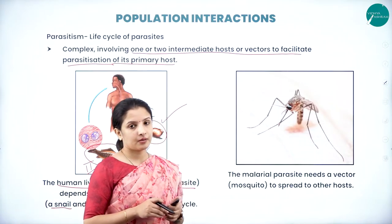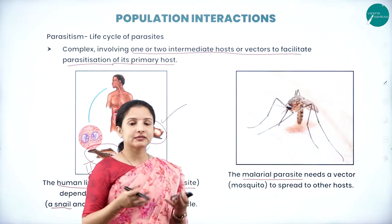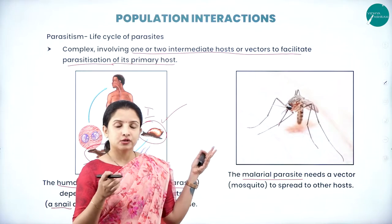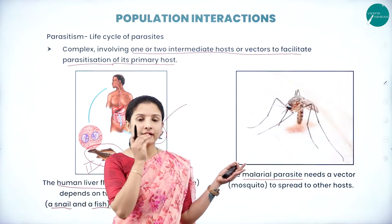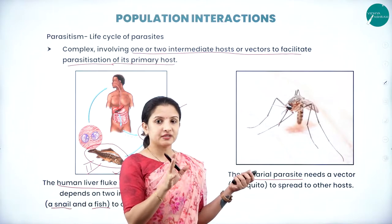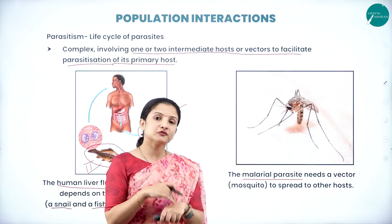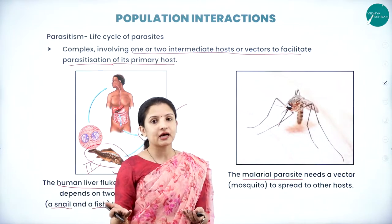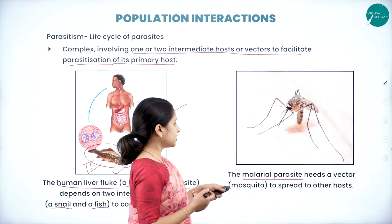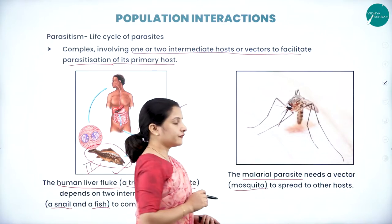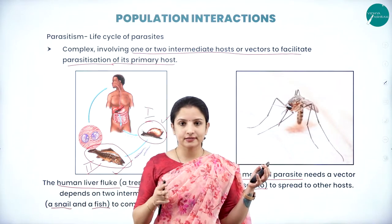Similarly, the malarial parasite needs a vector — the mosquito acts as a carrier vehicle. The malarial parasite resides in the mosquito, completing one half of its life cycle there. Spores of the parasite travel to the mosquito's saliva and enter the human body when the mosquito bites. The spores germinate and multiply in the human body, completing the second half of the life cycle. The malarial parasite needs the female Anopheles mosquito as a vector to spread to other hosts.